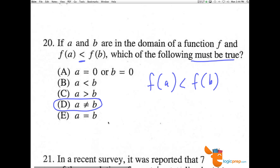Because we don't know anything about the way this function looks. It could be a line going negative, a line going positive, a could be here, b could be here. We don't know where it is. So d, a not equaling b, is the only thing that we know for sure is true.